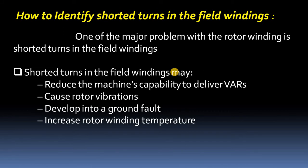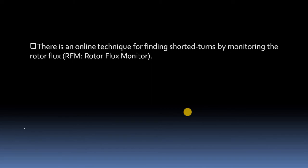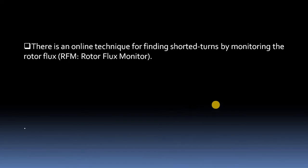Shorted turns in the field winding may also increase rotor winding temperature. If a field pole has shorted turns, that will decrease the net reactance, thereby increasing the current drawn from the supply, which raises the rotor winding temperature. It is therefore very important to identify which pole has shorted turns.